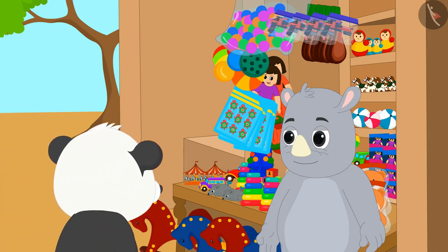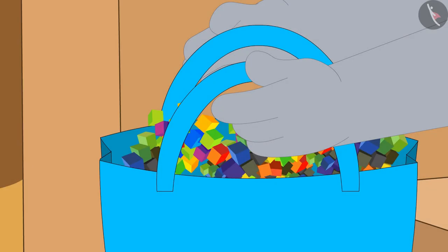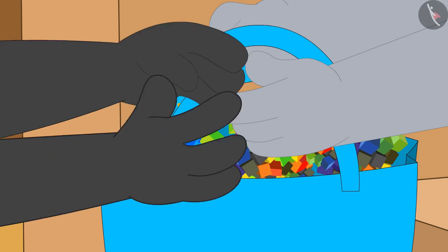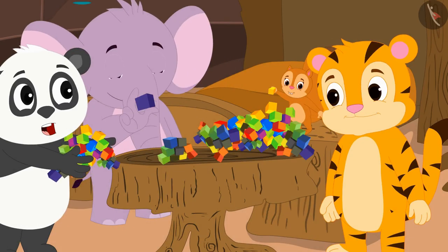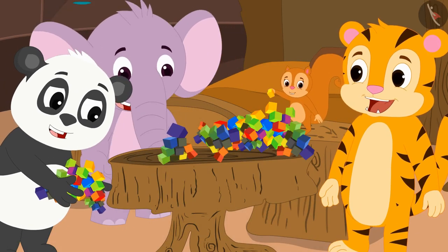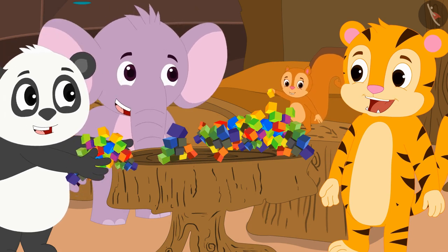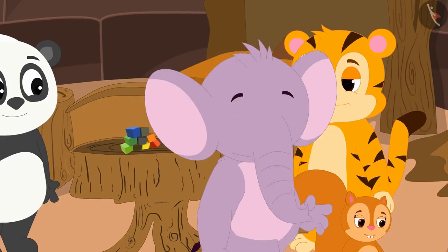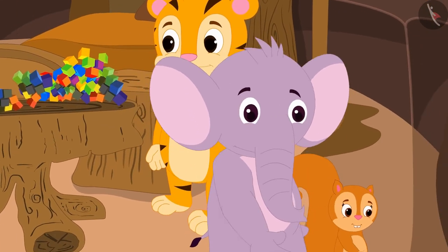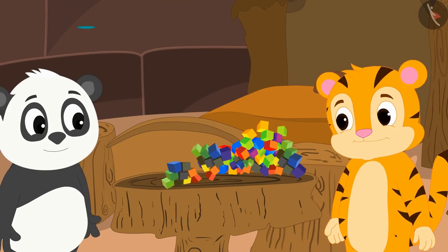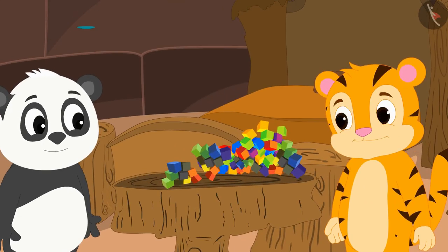Golu bought a lot of 1cm cube blocks from Gaggu's shop. Golu and his friends played with those blocks and had a lot of fun. All friends returned to their respective homes. Only Shere Khan stayed to help Golu.